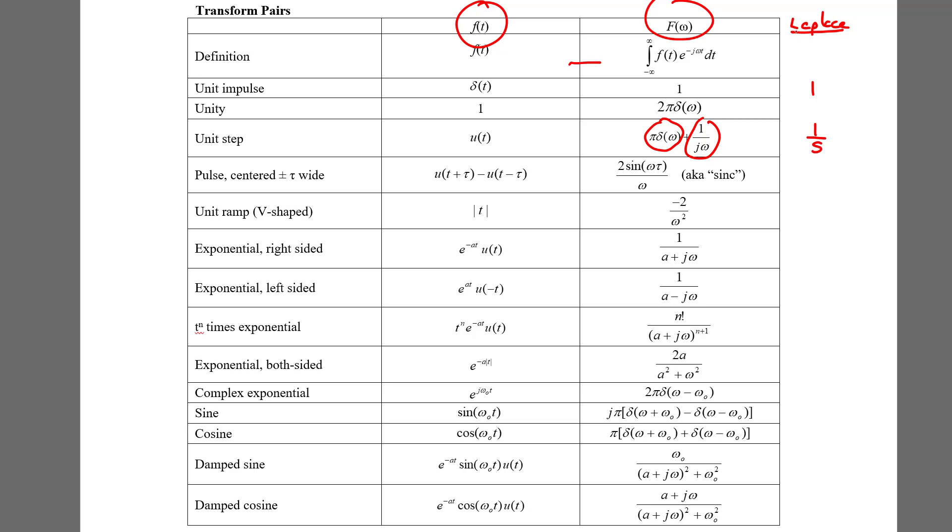Now here's something that's very different in the Fourier transform world. When we talked about Laplace transforms there was no difference in the time domain between 1 and u of t. Both of those functions had the same Laplace transform because the Laplace transform only looked at the right side. The Laplace transform began integrating from 0 minus to infinity.